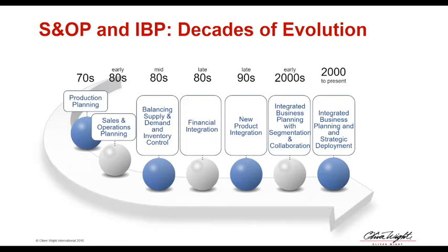S&OP implementations were typically sponsored by the supply chain organization, with a drive to get a grip on volumetric numbers to drive supply planning rather than recognizing the opportunity to take a business perspective and look at the financial implications of those plans as well.